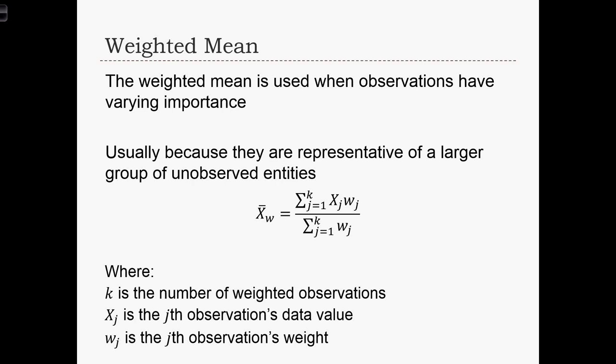We're going to use the weighted mean instead of the mean when observations have varying levels of importance. Usually, that's because observations are representative of a larger group of observations who are unobserved.